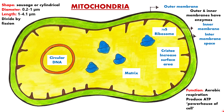The number of mitochondria per cell is variable depending on the physiological activity of the cells. Cells that are continuously active require more energy and contain more mitochondria. Mitochondria divide by fission. They have a sausage or cylindrical shape. The diameter is 0.2 to 1 micrometer and the length is 1 to 4.1 micrometers.